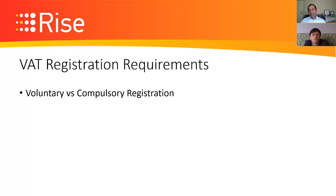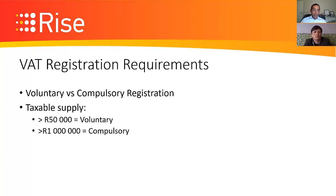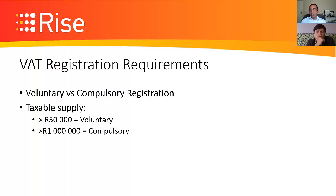For VAT registration, there are two components: voluntary and compulsory. If your taxable supply is more than R50,000 but less than R1 million per annum, you can voluntarily register for VAT. If your taxable supply is more than R1 million, you must register. Those are the two major requirements for VAT registration.